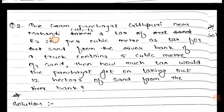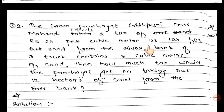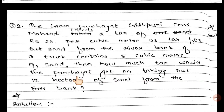Question number 2. The Gram Panchayat Gidpuri near Mahanadi collects a tax of Rs.20 per cubic meter for sand from the river bank. A truck contains 5 cubic meters of sand. How much tax would the Panchayat get on taking out 12 truckloads of sand from the river bank?